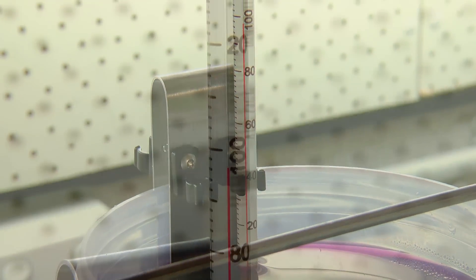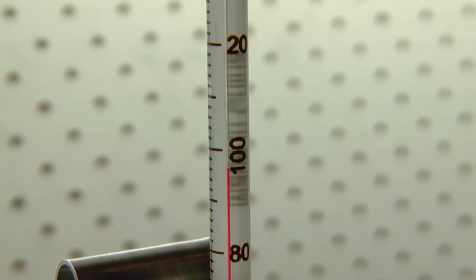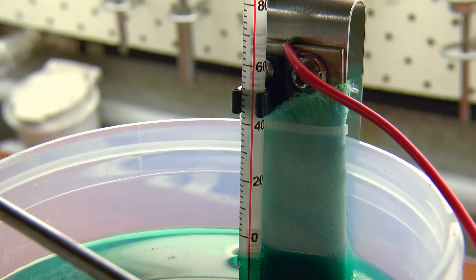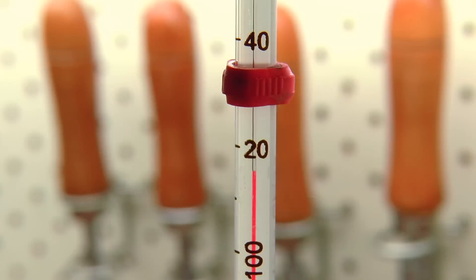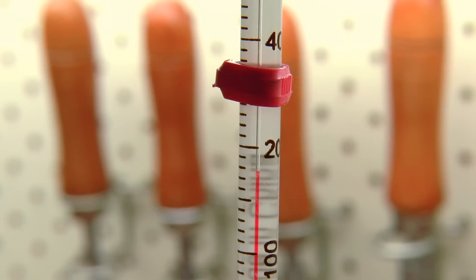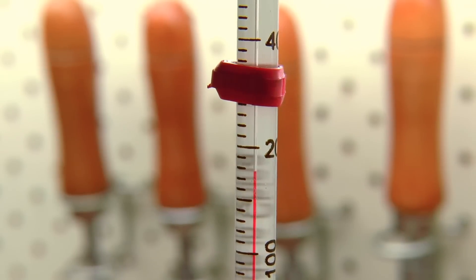Plating is an electrochemical reaction, and so like most chemical processes, the temperature of the solution plays a major role in the outcome. Each solution has an optimum temperature range, specified by the manufacturer, and in this case a simple heating element and thermometer make that easy to manage.